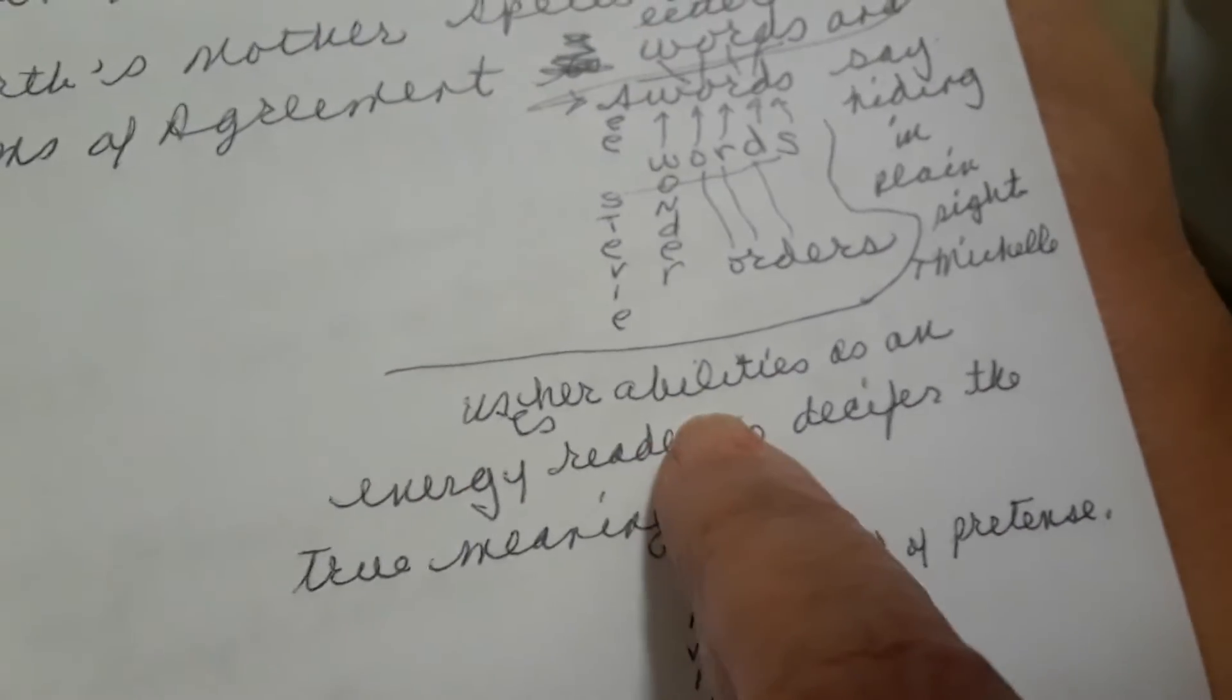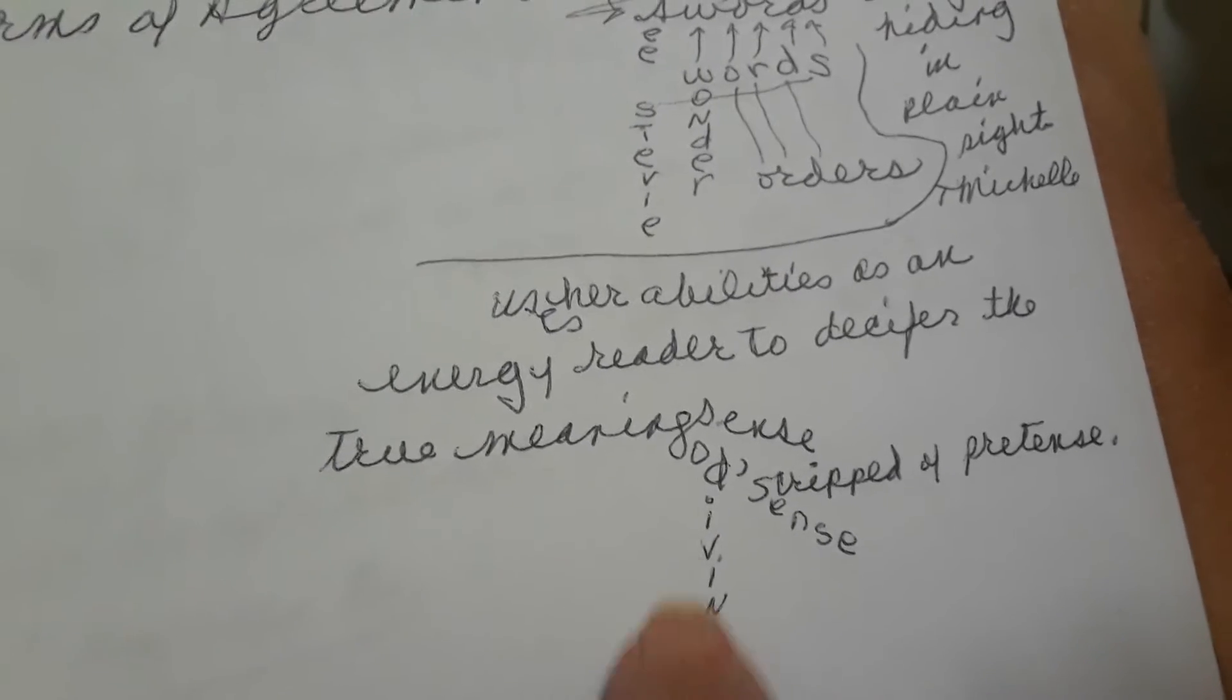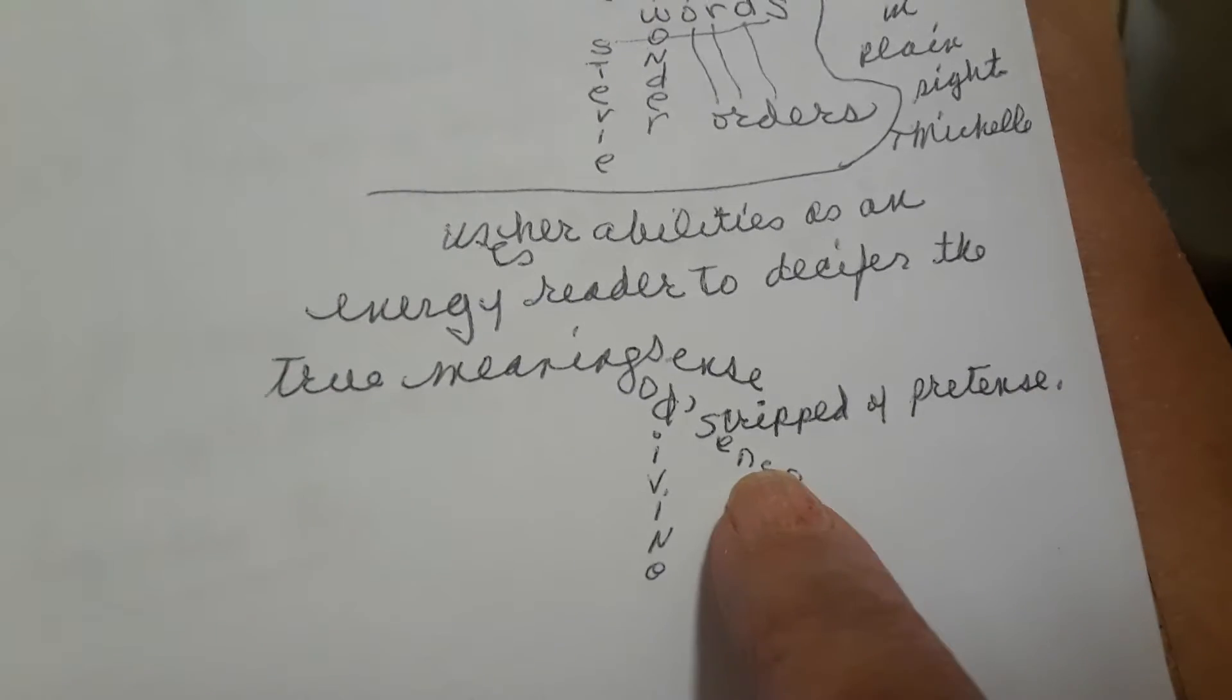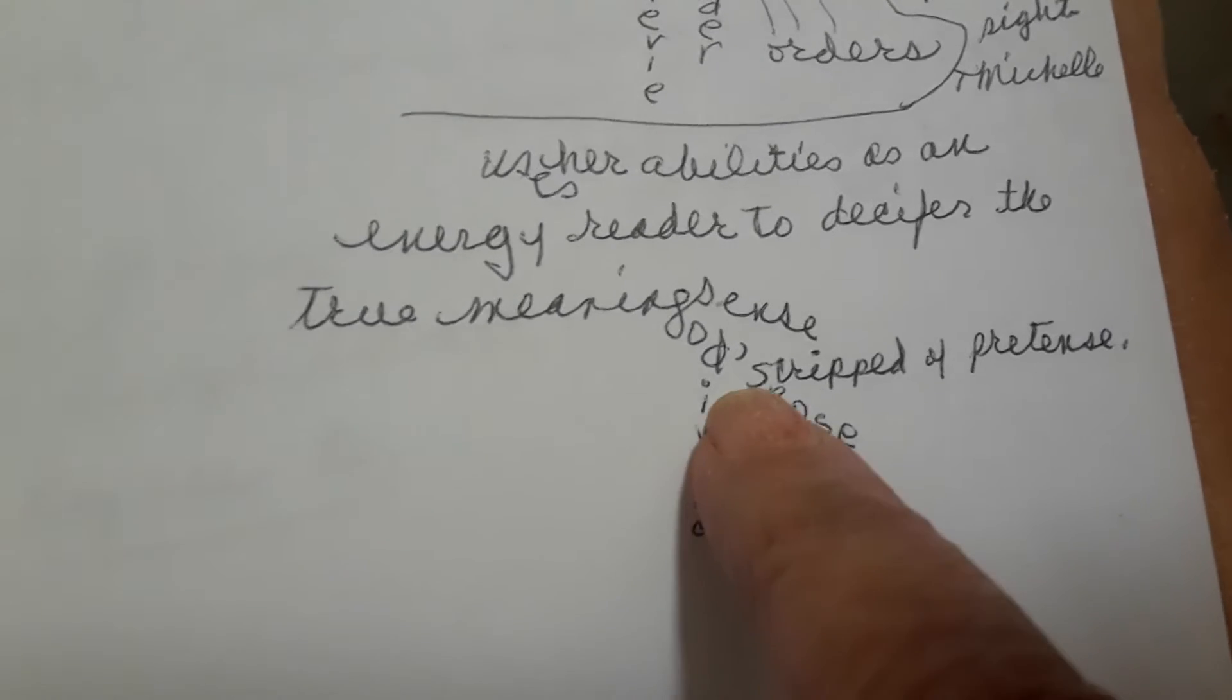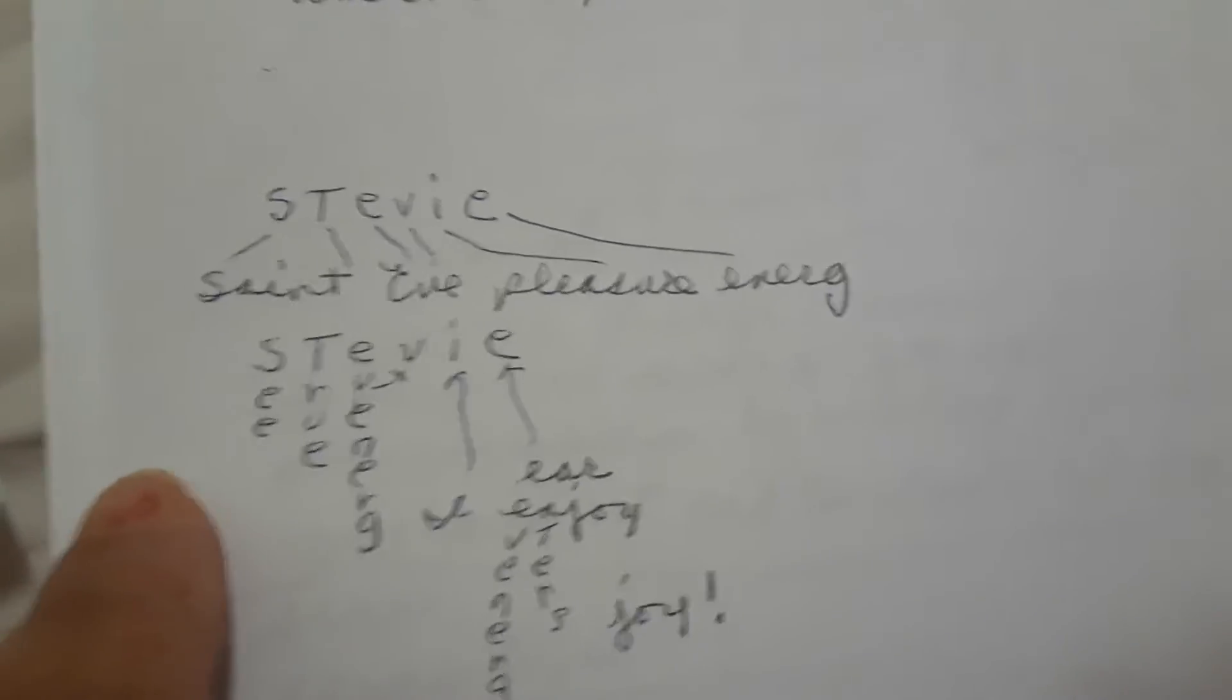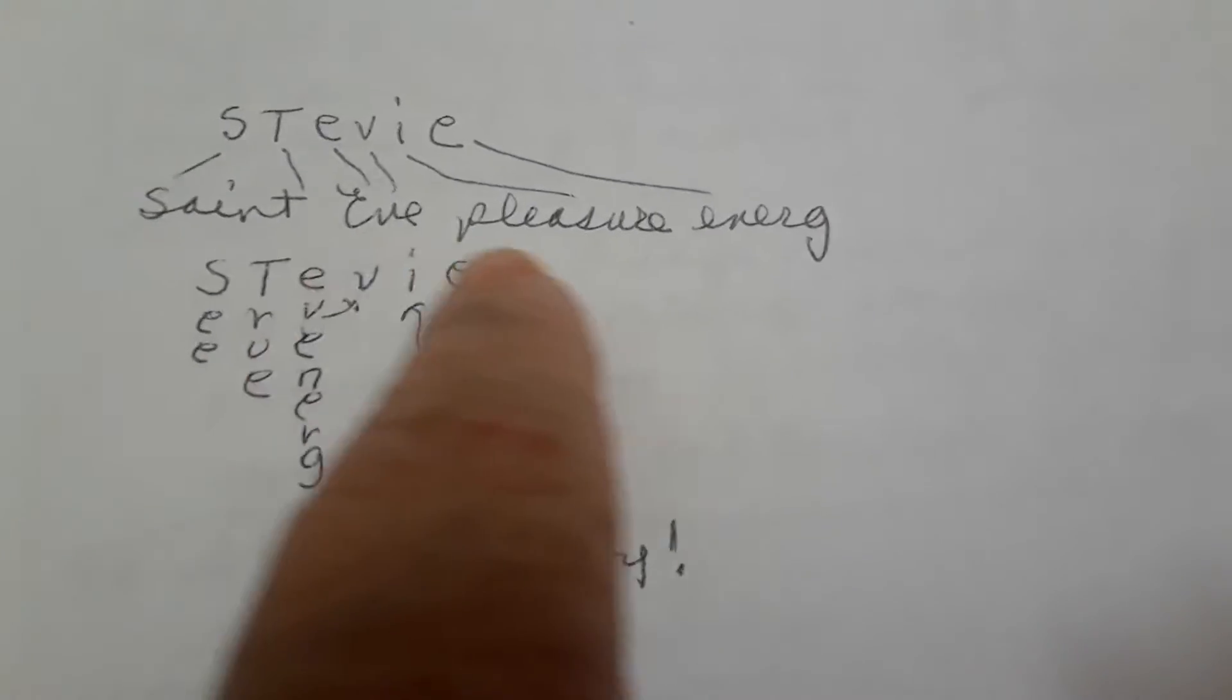She uses her ability as an energy reader to decipher the true meanings. God's divine sense stripped of pretense. You see, what I do is I take the letter and use it as a clue as to what the word is. For example, D for divine, S for sense, S for stripped. Get it? And over here, let's see, we got some words in the word Stevie. S for saint, EV for Eve, I for pleasure, and E for energy. Saint, Eve, pleasure, energy.